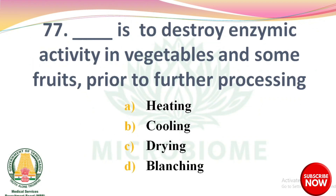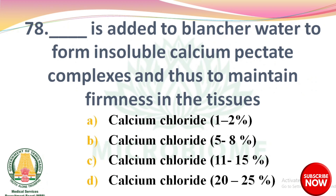Next question: dash is used to destroy enzymic activity in vegetables and some fruits prior to further processing. Options: heating, cooling, drying, blanching. The right answer is Option D: blanching. Next question: dash is added to blancher water to form insoluble calcium pectate complexes and thus to maintain firmness in the tissues. Options: calcium chloride 1–2%, calcium chloride 5–8%, 11–15%, 20–25%. The right answer is Option A: calcium chloride 1–2%.